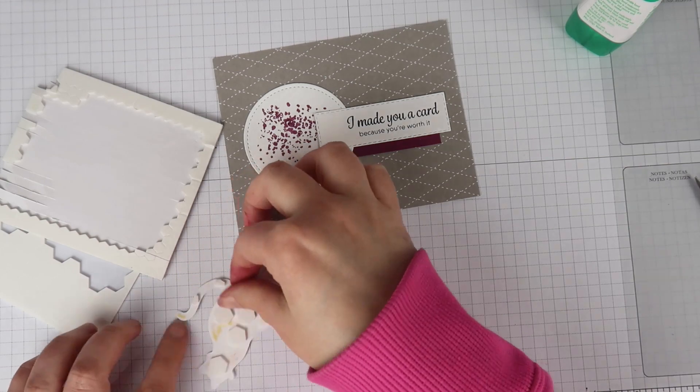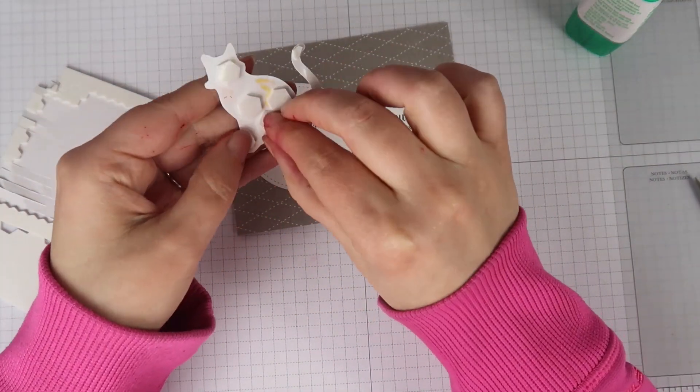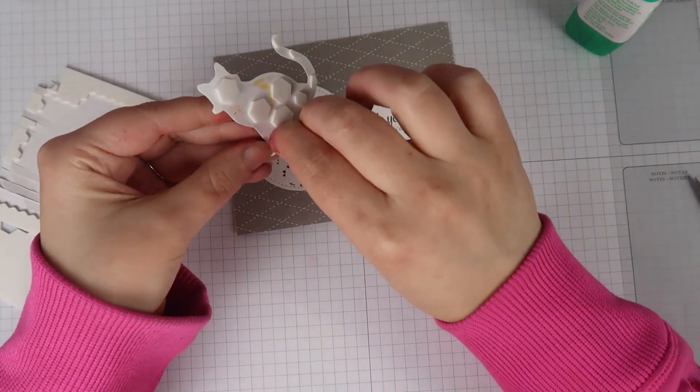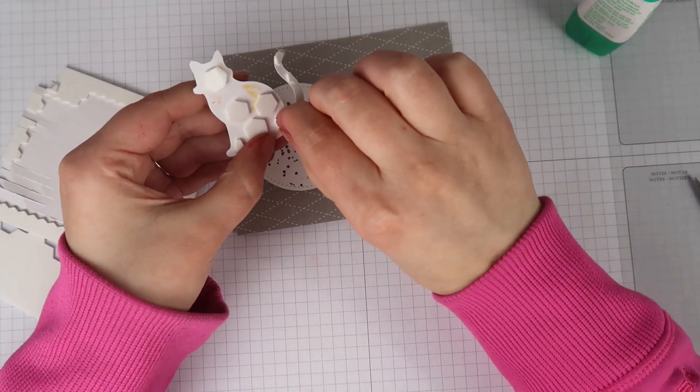When I get to tiny places that I want to pop up, like the back of the cat's tail, I just cut my dimensionals down. I'm actually using mini dimensionals from this and then I'm cutting them in either halves or thirds just to make sure that the tail is supported as well.